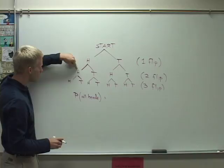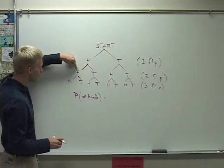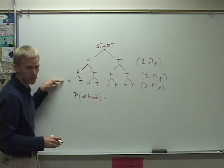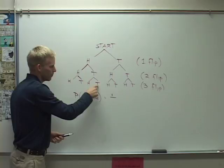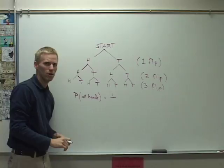We could say, well, head, head, head happens right here. That's one way of doing it. There are no other branches that have all heads in them. So we have one option out of eight. There are eight possible outcomes. Getting all heads was one out of that eight.